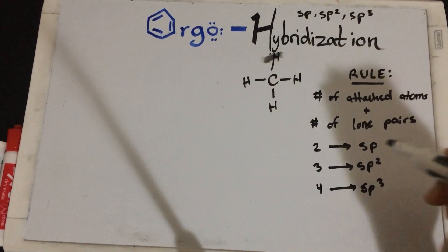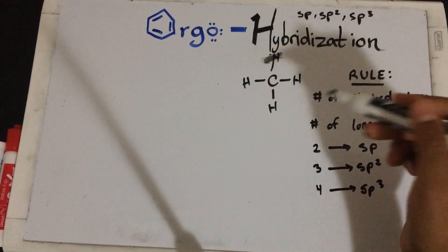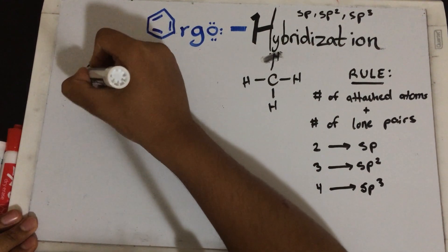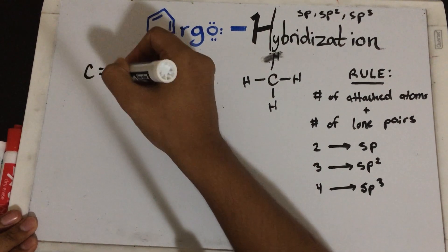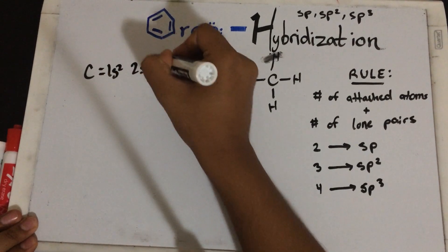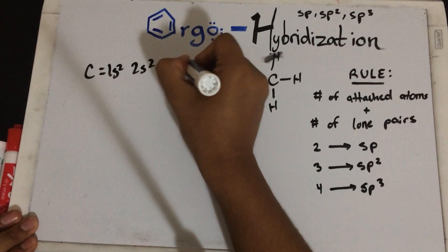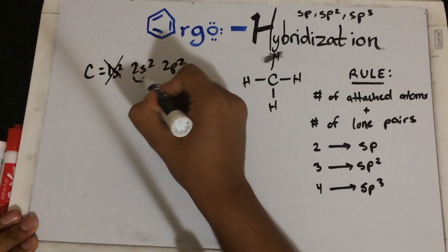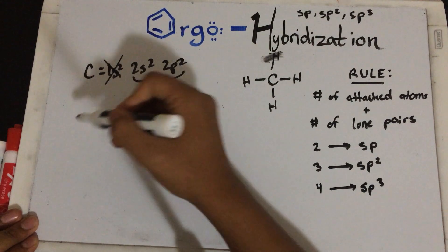Before we go into how carbon can make four different bonds, let's go into the electron configuration of carbon. This is something from Gen Chem, which is 1s2, 2s2, and 2p2. Since the 1s2 is the internal orbital, we're not going to look at that, but rather the valence electrons, this is what really matters.